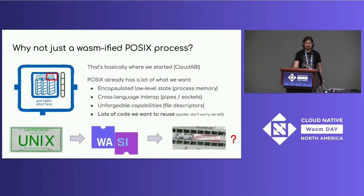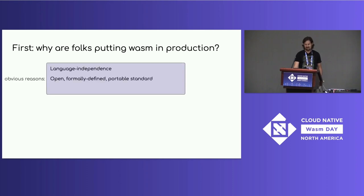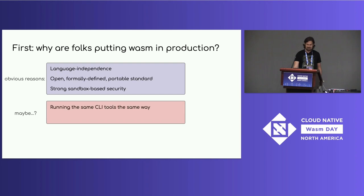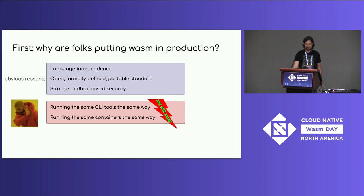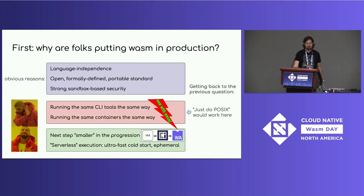So is that just it — take POSIX, stuff it into WASM, mission accomplished? Well, let's take a step back and ask why people are putting WASM into production. There are obvious reasons like language independence, an open formally defined portable standard, and strong sandbox-based security. But what's really motivating us is taking the next step in the progression from VMs to containers to WebAssembly — or serverless execution with ultra-fast cold start and ephemeral lifetimes. Just doing POSIX would work for some cases, but for these more futuristic use cases, we ran into trouble.